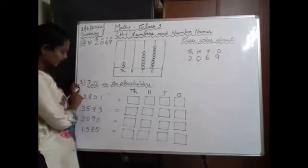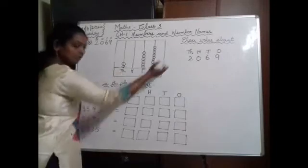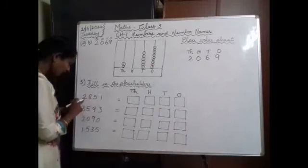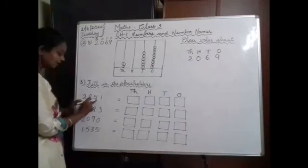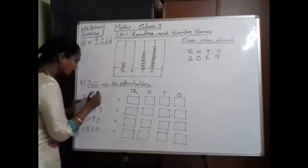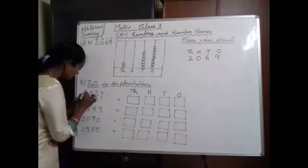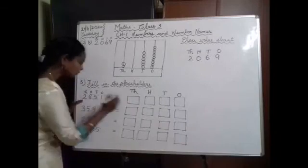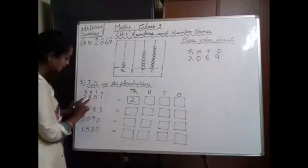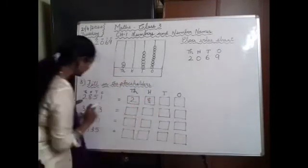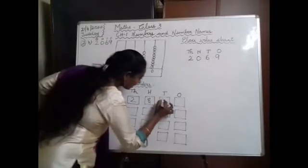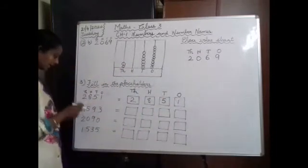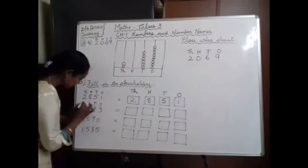We will proceed to question number 3: Fill in the placeholders. Same method — we are going to represent these numbers in the place value chart. The first number is 2,851. Write 1s, 10s, 100s, 1000s. In the 1000s place, 2 is there. In the 100s place, 8 is there. In the 10s place, 5 is there. In the 1s place, 1 is there.